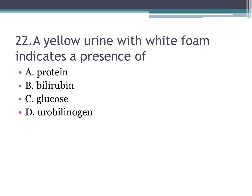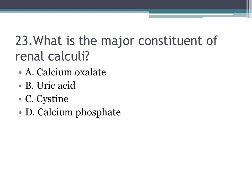Number twenty-two: yellow urine with white foam indicates the presence of — A. protein, B. bilirubin, C. glucose, D. urobilinogen. The correct answer is A, protein. Do not be misled by the yellow color — normal urine is yellow. But the white foam indicates protein.